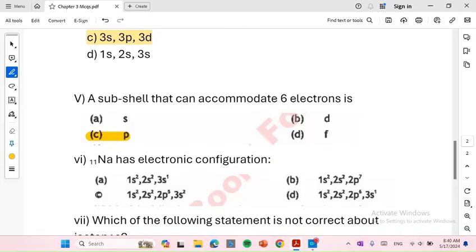Na11 has electronic configuration 1s², 2s², 2p⁶, 3s¹.